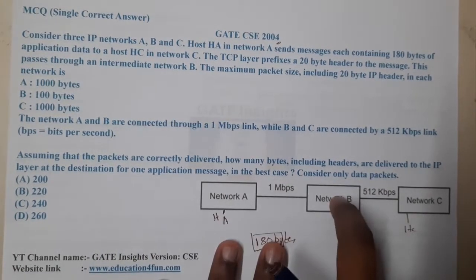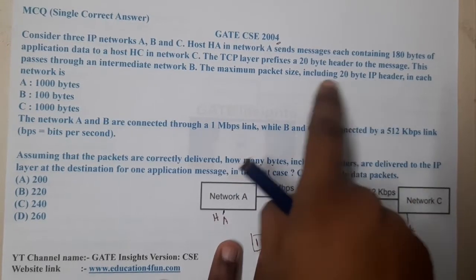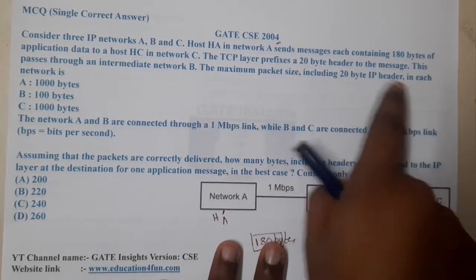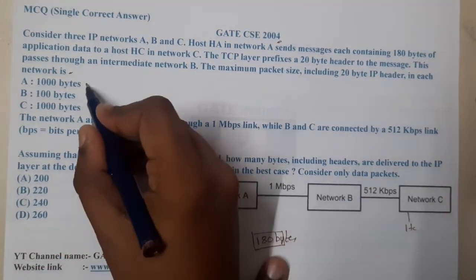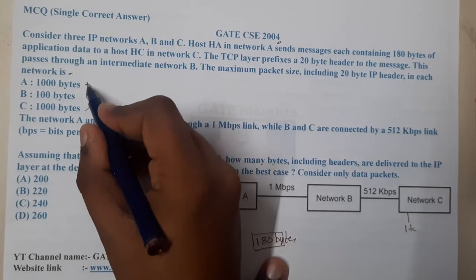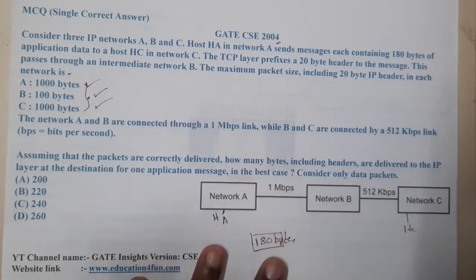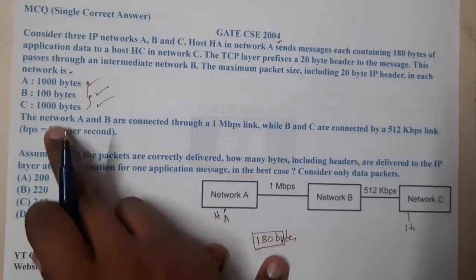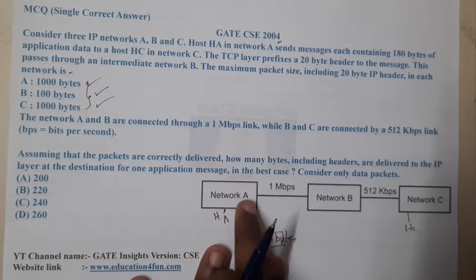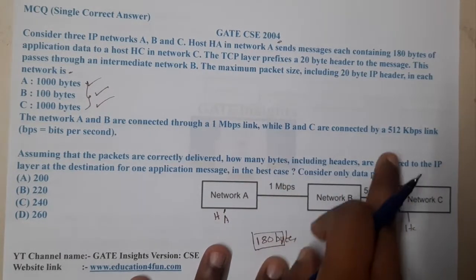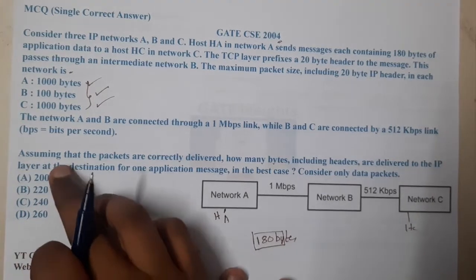This passes through intermediate router B. The maximum packet size including the 20-byte IP header in each network is: network A allows 1000 bytes, network B allows 100 bytes, and network C allows 1000 bytes. Networks A and B are connected through a 1 Mbps data link, while B and C are connected with a 512 kbps data link.